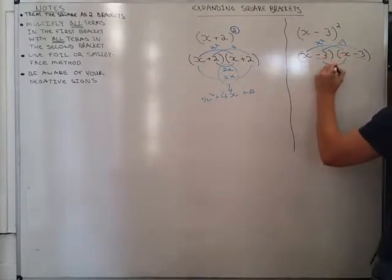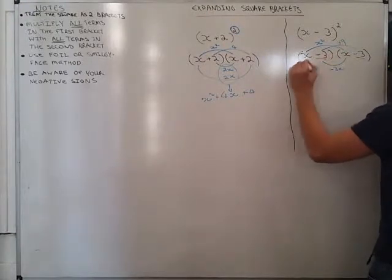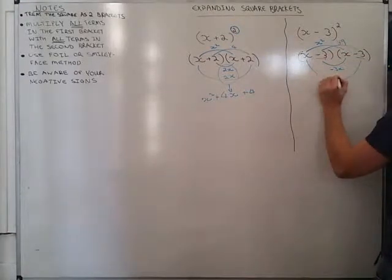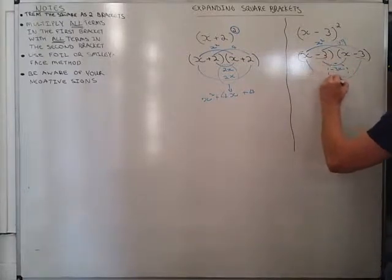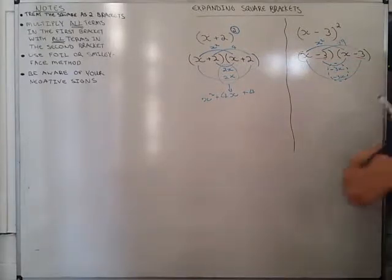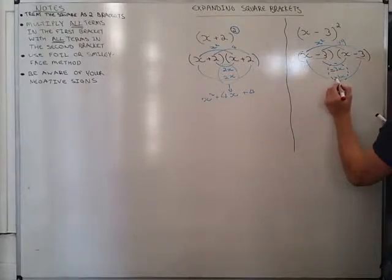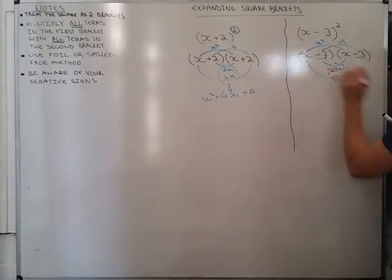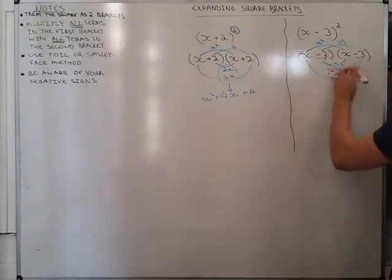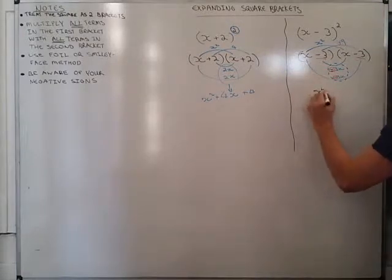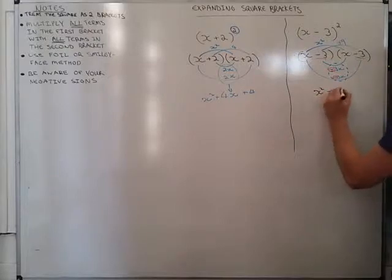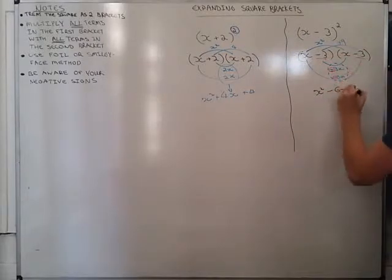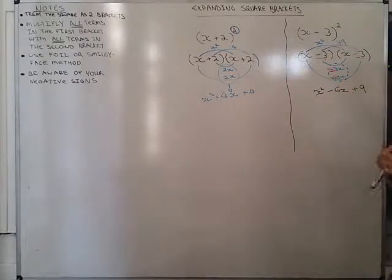And then, negative 3 times x is going to give me negative 3x. And x times negative 3 is also going to give me a negative 3x. So if I combine my like terms, I would, again, that's a negative 3 there. You've got to bear in mind your negatives there. So, x times x is giving me x squared. Negative 3x and negative 3x is negative 6x, and that's a positive 9 there.